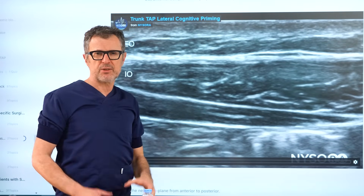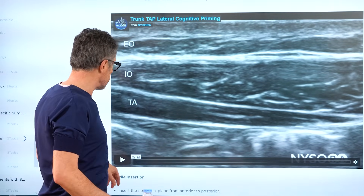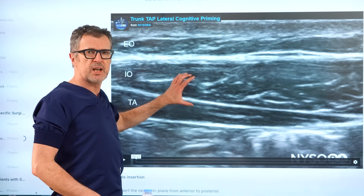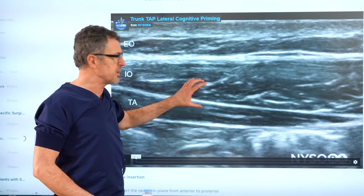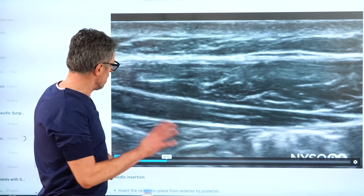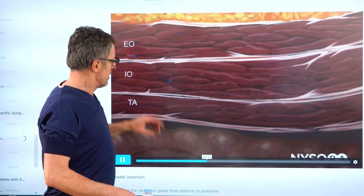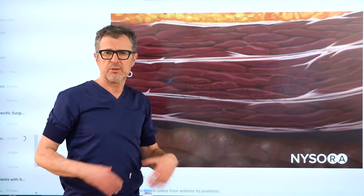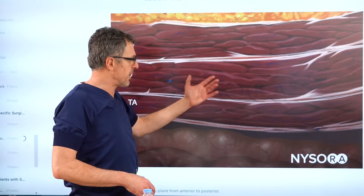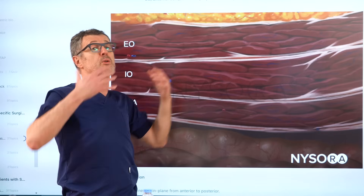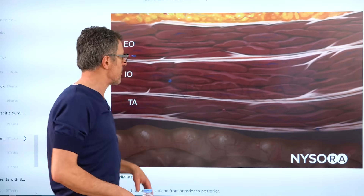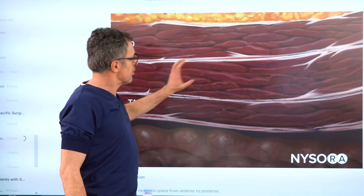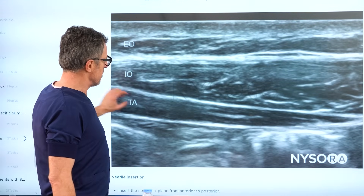This is NYSORA's reverse ultrasound anatomy animation. What we want to do with this animation is take the viewer from the ultrasound image during the lateral TAP block procedure into the illustration, so the viewer can ingrain these anatomical patterns. The next time you position a probe on a patient's belly, you can quickly recall those patterns and reproduce the images necessary for the TAP block. Here you can see how the illustration transitions into the ultrasound anatomy and back.